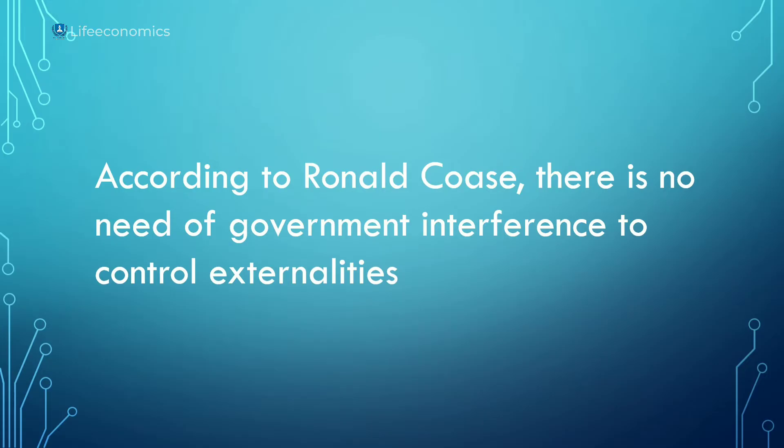According to Ronald Coase, there is no need for government interference to control externalities. That is why these externalities are controlled privately. There are positive externalities and negative externalities.